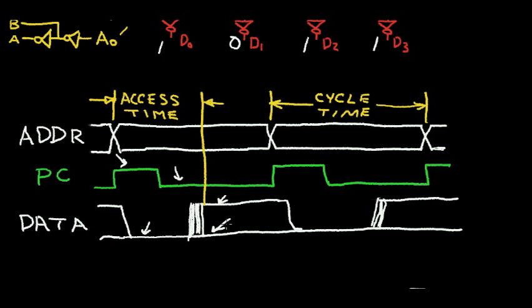Now, the key timing parameters for the ROM is the access time. So when I change my address, for example right here, I change my address and I have to wait a certain amount of time for my data at the output to become valid. So a very fast ROM may become valid here. For a slower ROM, it may become valid here. So the access time is the time I must wait for the data to become valid. The cycle time shown here tells me how quickly I can change the address.